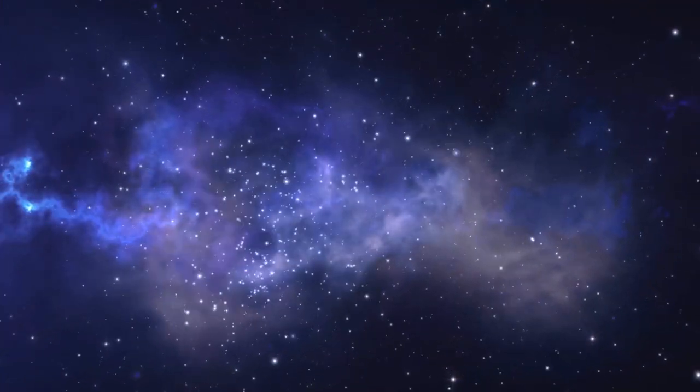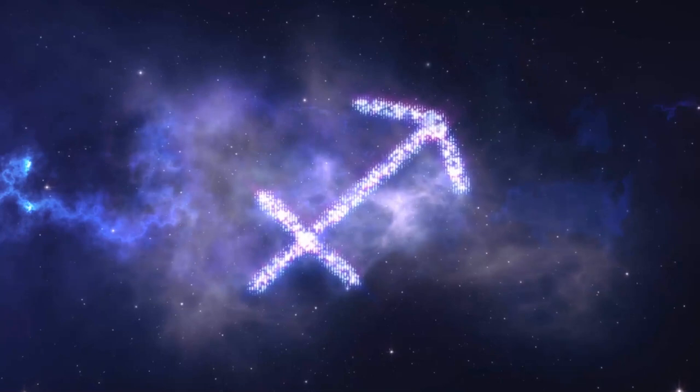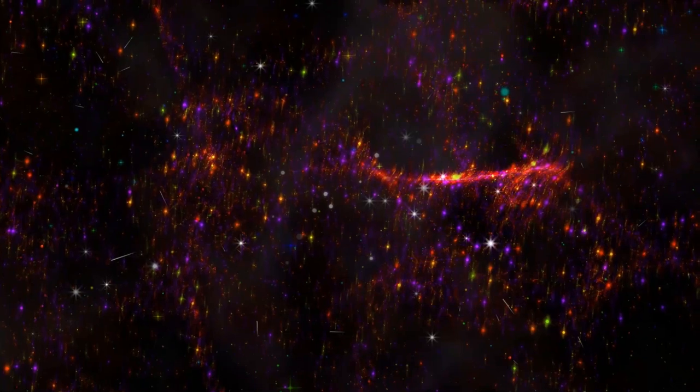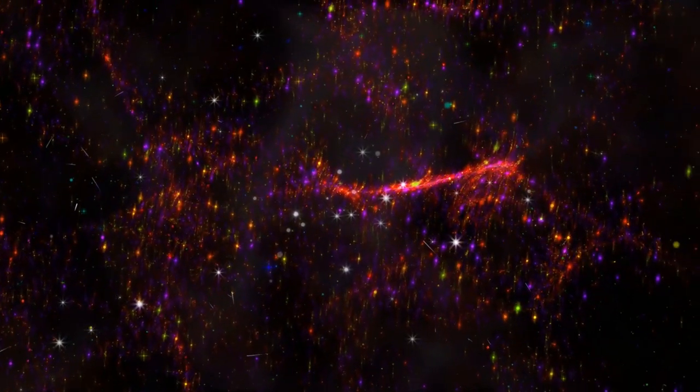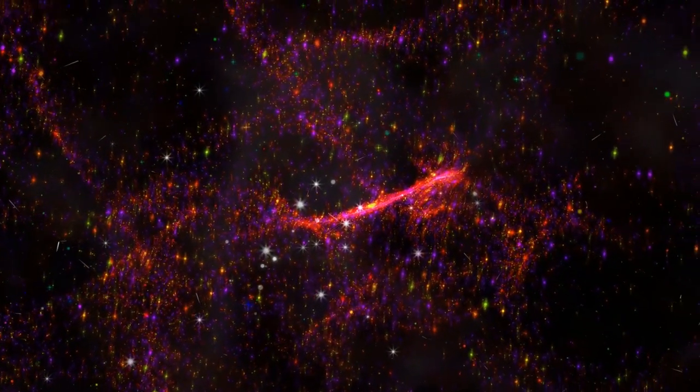At the heart of the Milky Way lies a supermassive black hole, Sagittarius A asterisk. The colossal structure is about 4 million times the mass of the Sun and lies approximately 26,000 light years away from Earth.